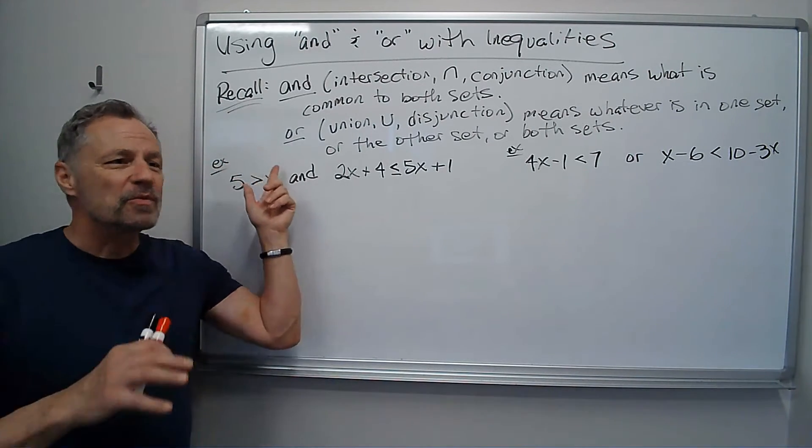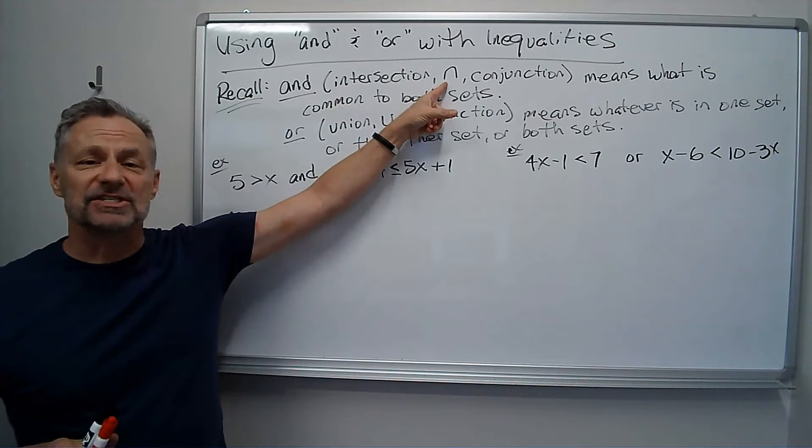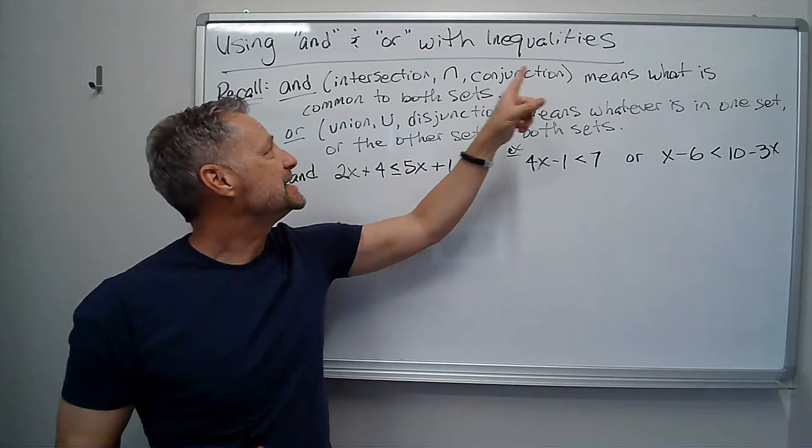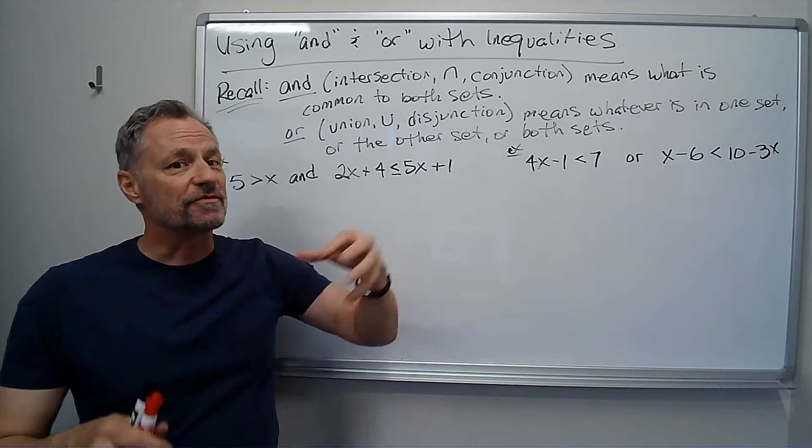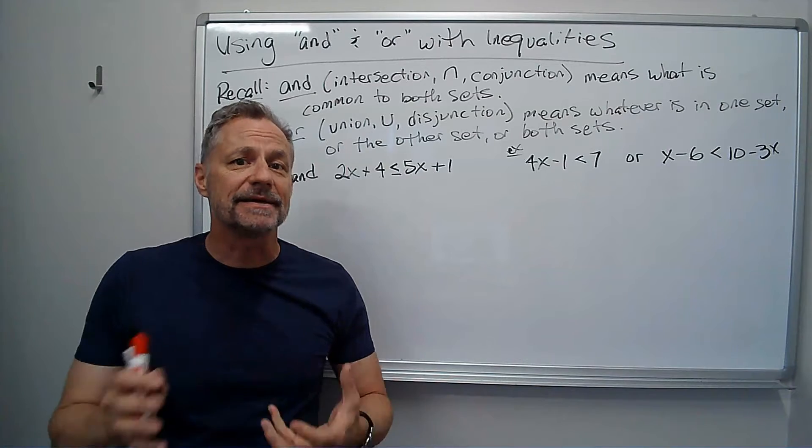Recall from what we've done before. AND, sometimes they call it the intersection, that's the intersection symbol or the conjunction. AND means whatever is common to both sets. So if it says AND in between, it has to be common to both sets to be in the set of AND.